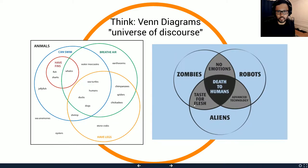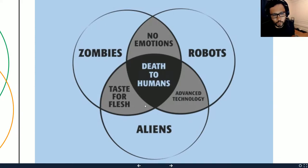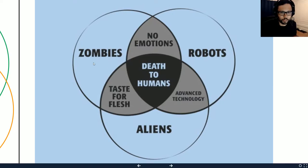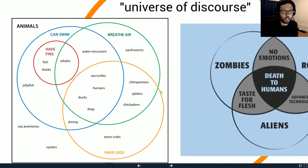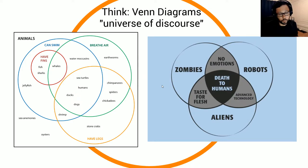Here's another Venn diagram — robots, zombies, aliens. Robots and zombies both have no emotions. Zombies and aliens both have a taste for flesh. Aliens and robots both have advanced technology. And all three have an interest in killing all humans. These are different interest groups whose interests overlap in various ways. The scope of their interests gives them certain alliances and tensions. This is a way to think about the scope of ethical consideration in informal terms.